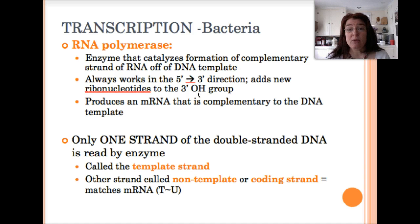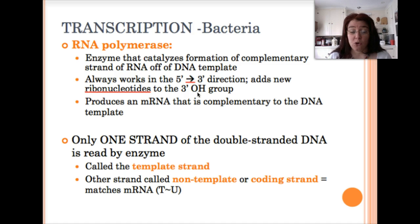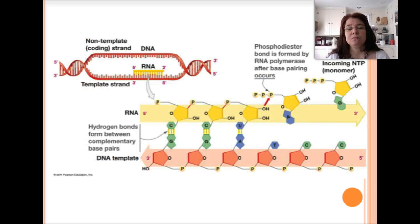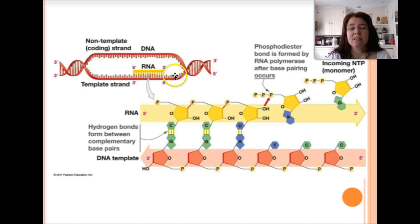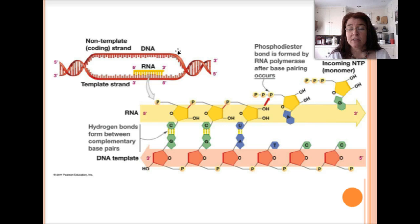Only one strand of DNA serves as the template molecule for the formation of the new RNA molecule. The other strand is known as the non-template strand, or coding strand — it is complementary to the template strand. In the area where the double helix is opened up, the bottom strand serves as the template, and RNA is produced in a complementary manner to it; the other strand is not used.